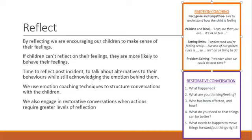When smaller incidents occur, we use emotion coaching techniques to structure conversations with the children. You can see an example of the script we use in the top right-hand corner of the screen. There are four stages: firstly, recognise and empathise — aim to understand how the child is feeling. Then validate and label: 'I can see that you're feeling frustrated, and it's okay to feel frustrated.' Then set limits: 'I understand you are feeling frustrated, but one of our golden rules is to be safe, so hurting others isn't okay.' And finally, problem-solve with the child: 'I wonder what we could do next time?' and discuss how to approach it differently.